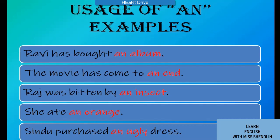'End' gives a vowel sound, so we have used 'an' before it. 'Raj was bitten by an insect.' 'She ate an orange.' 'Sindhu purchased an ugly dress.'